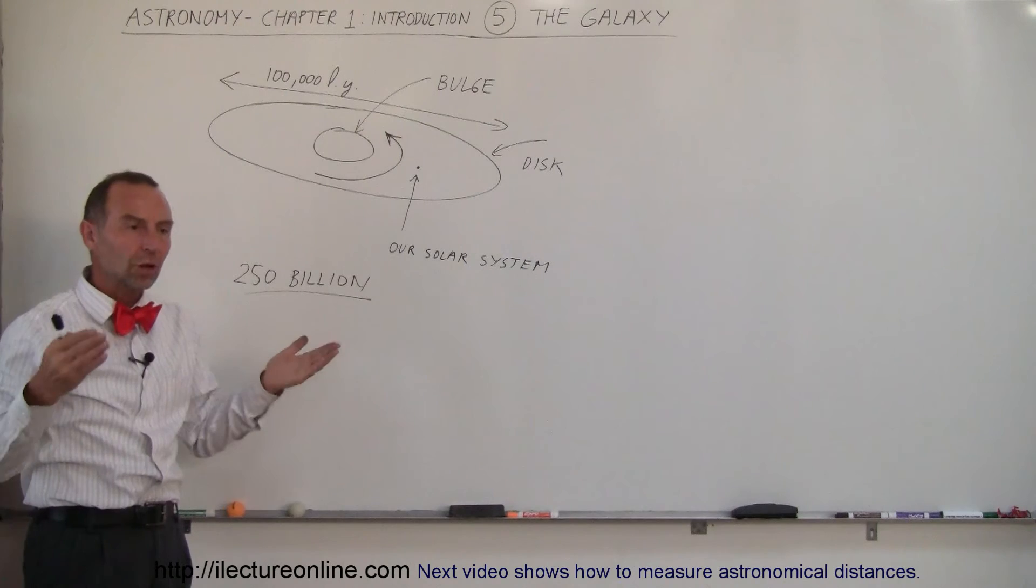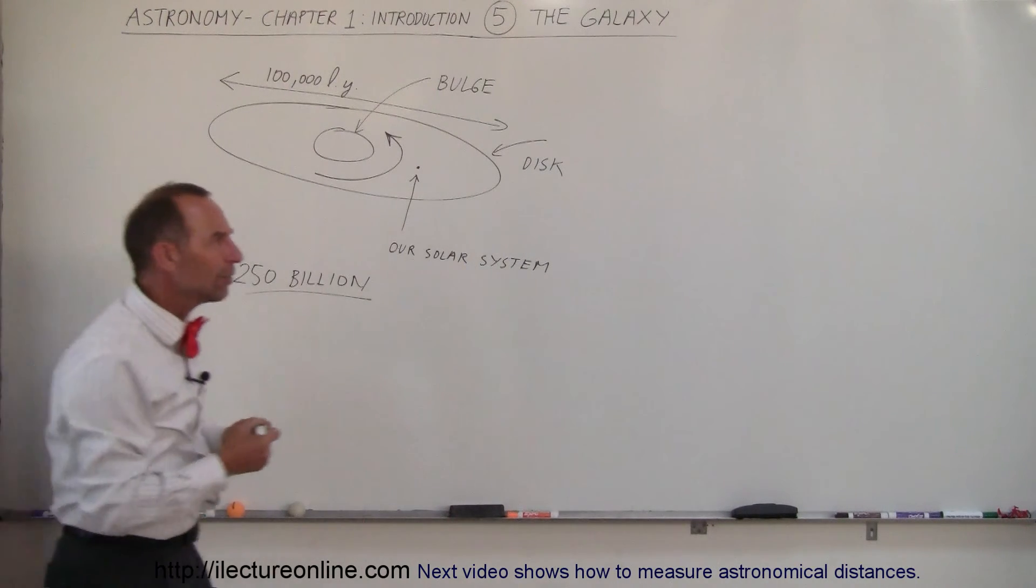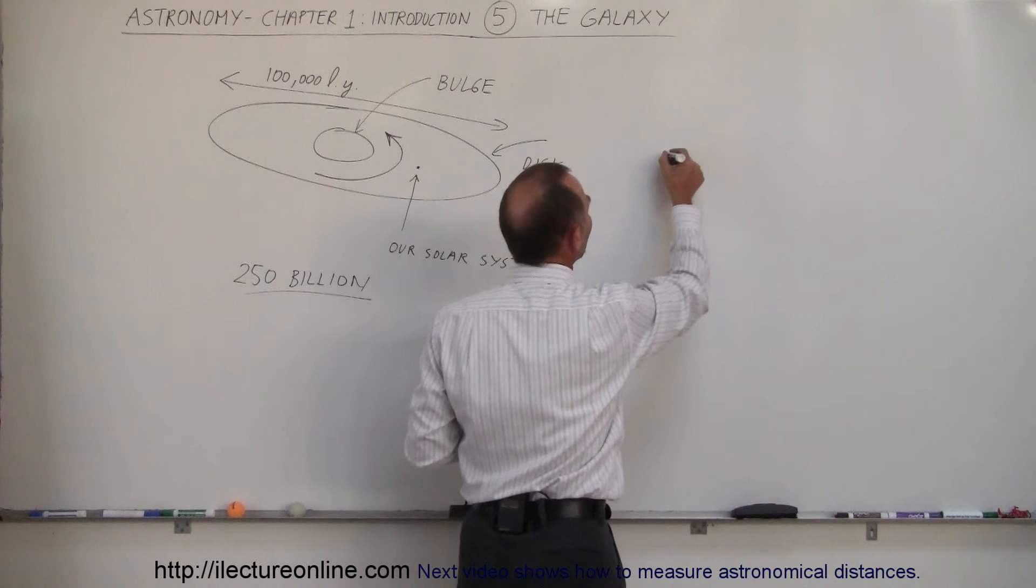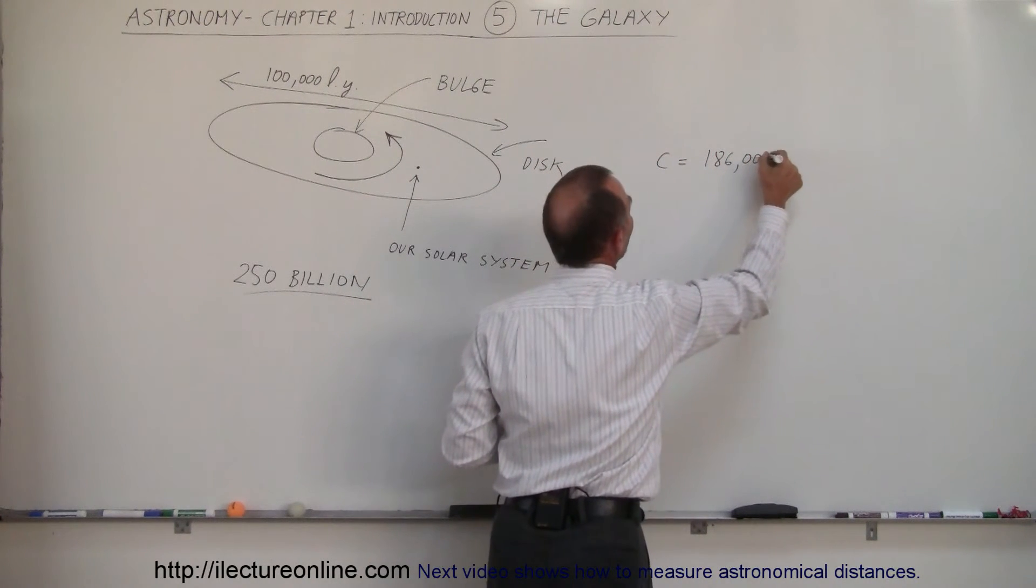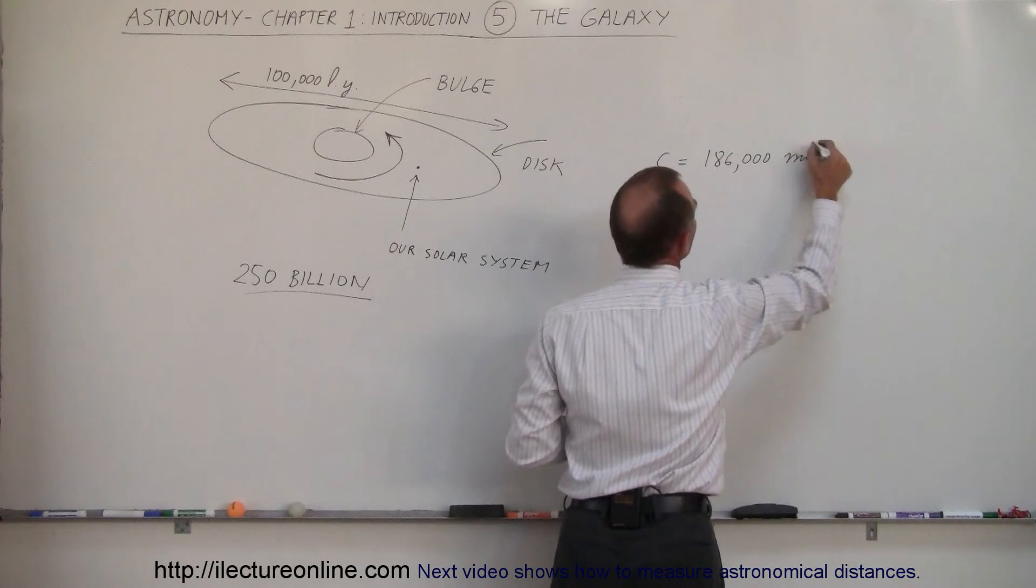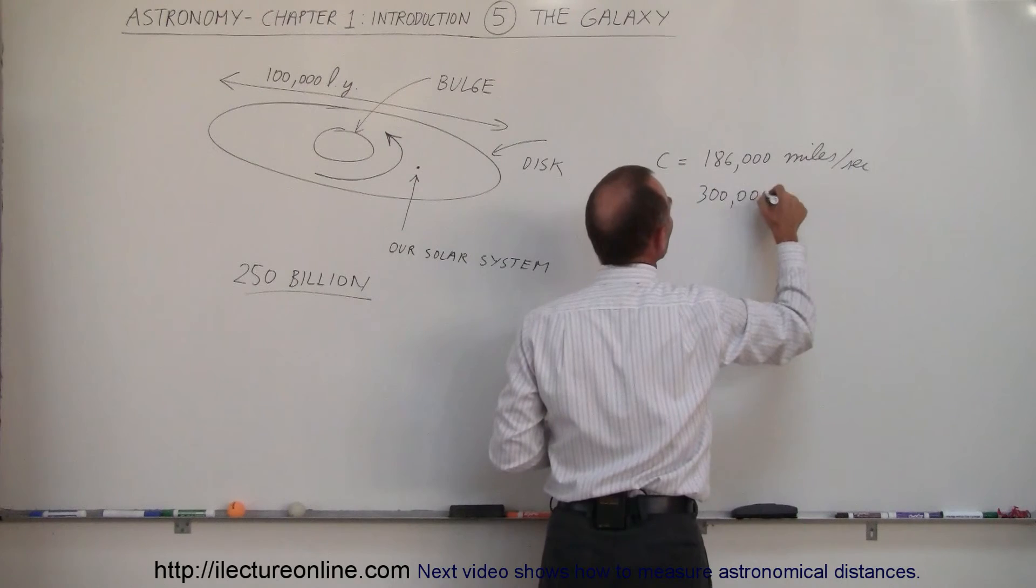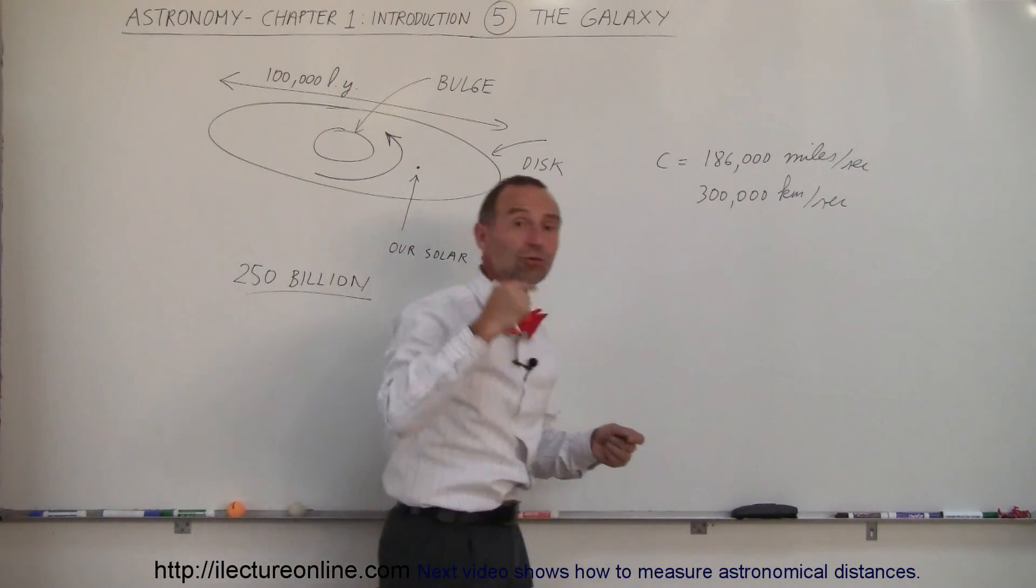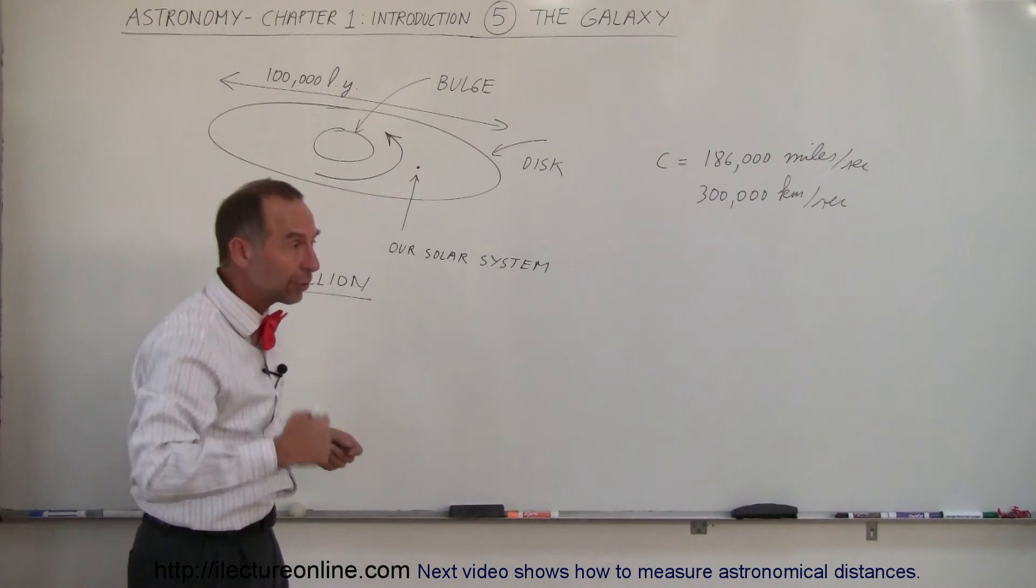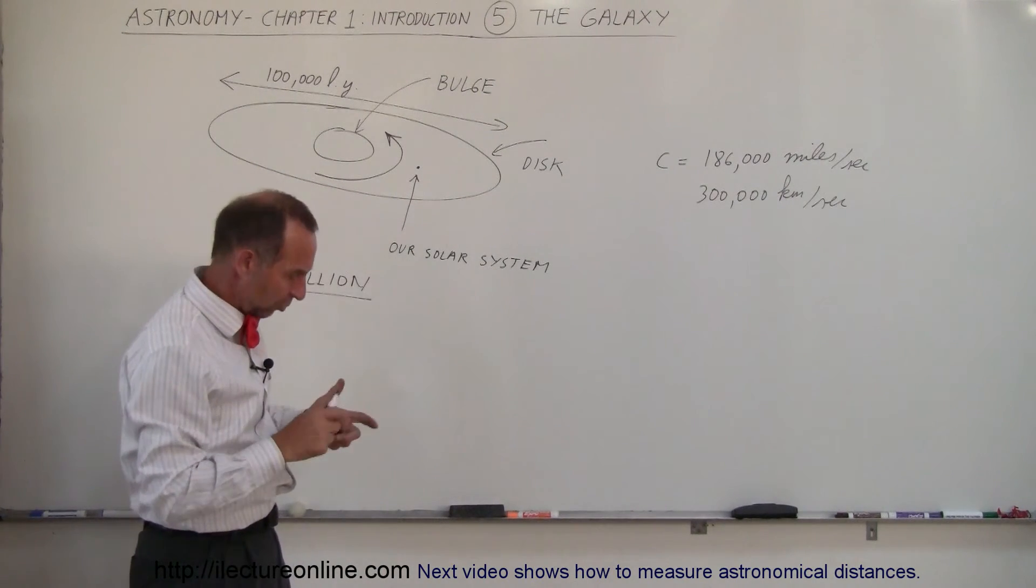The reason why one light year is so large is because light travels at an enormous speed. Light travels, and we use the letter C for the speed of light. The speed of light is about a hundred and eighty six thousand miles per second, or about three hundred thousand kilometers per second, which means that if light could travel in a path around the Earth, of course it doesn't, light travels in a straight line.